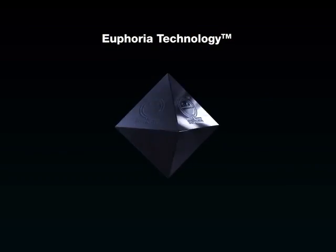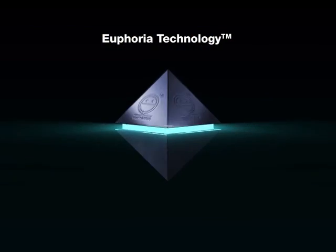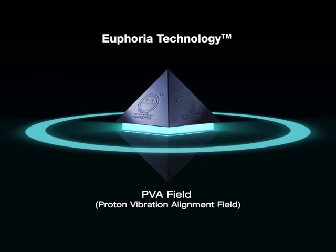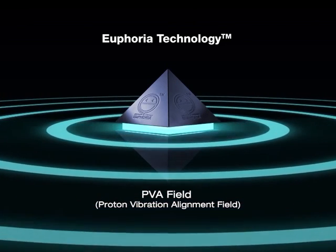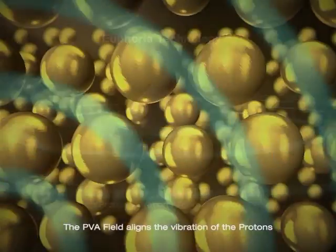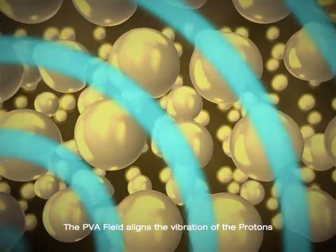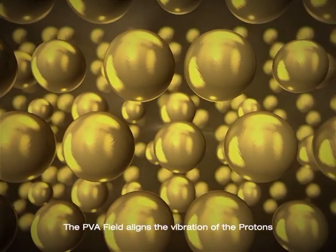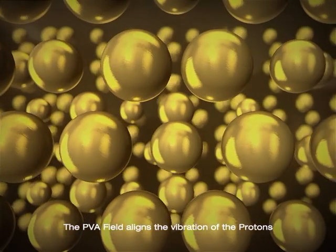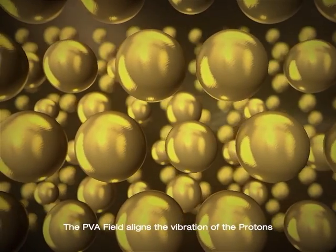The Euphoria Technology invented by IPC generates a PVA field, which stands for Proton Vibration Alignment Field. This PVA field aligns the proton vibration and movement to improve the physical properties of matter. As the electrons are attracted to the protons, they are aligned as well.